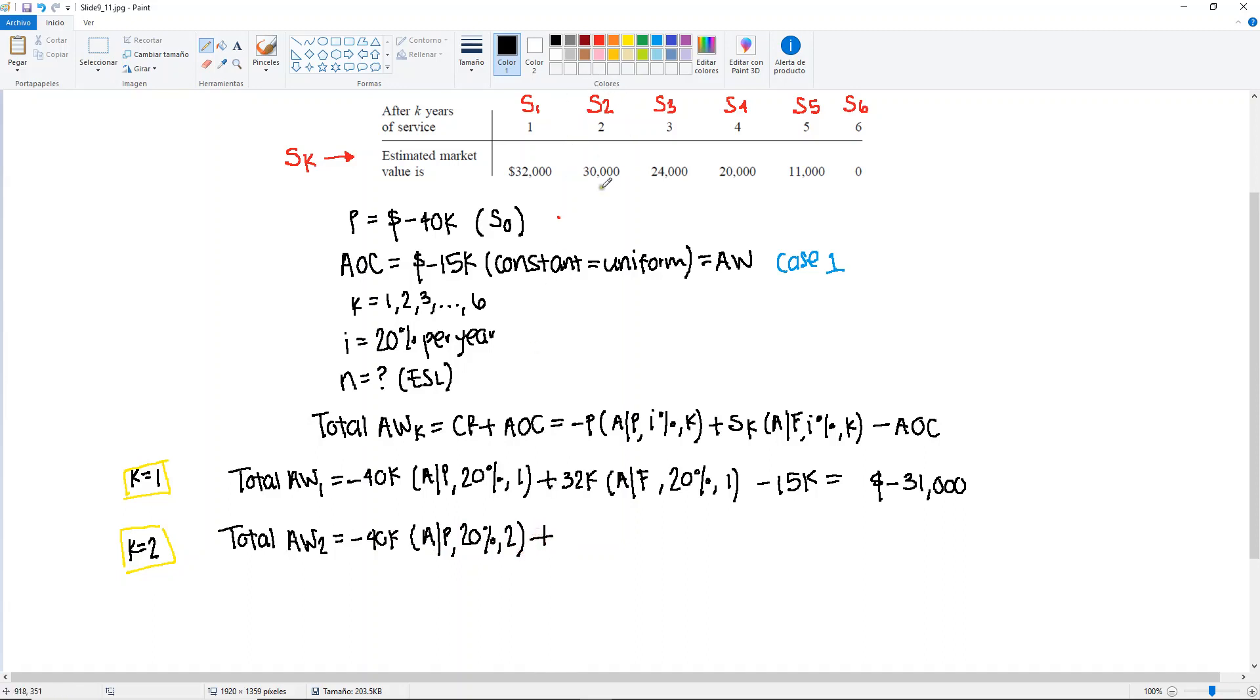Plus, now we're going to use the S2. We no longer use S1. Now we want to know the salvage value or what would it be worth in the second year. So it's going to be 30,000. Find A given F at 20% for 2 years. Minus the same annual operating cost. This will give a total of minus 27,546.